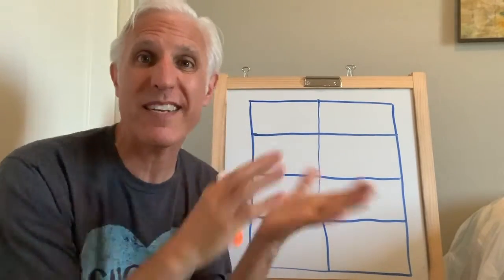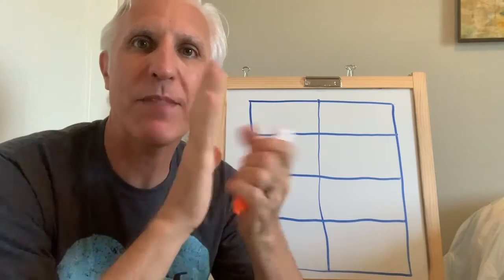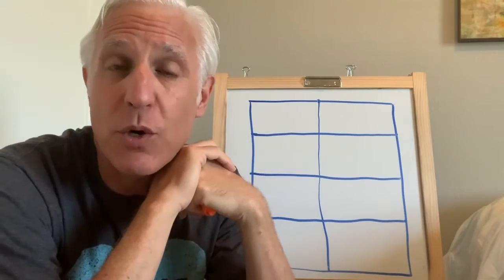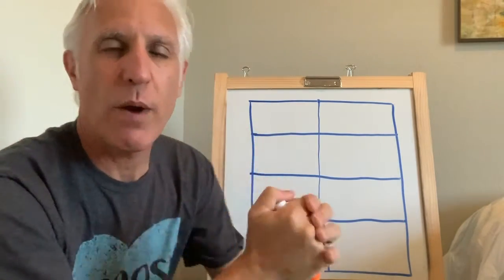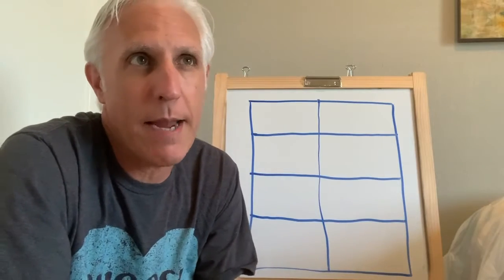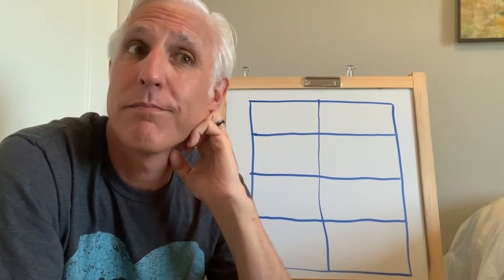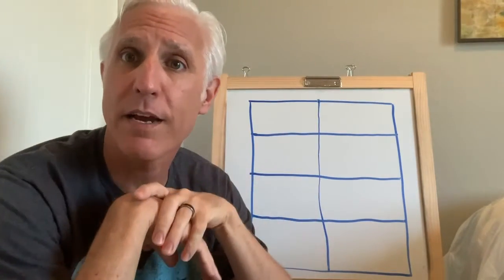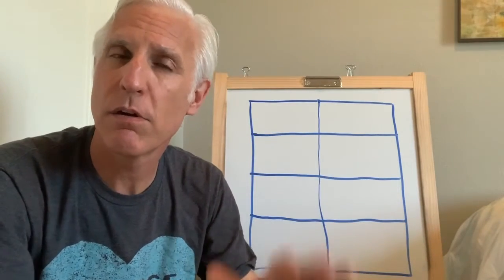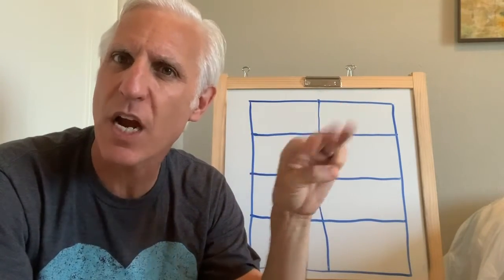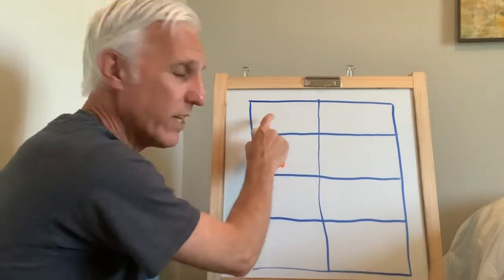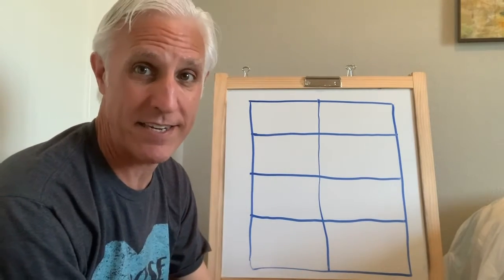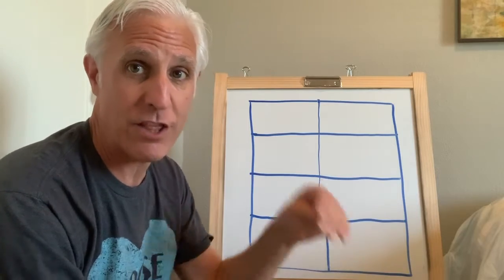We're gonna do our first story up in this box here — it's gonna be a subtraction story. Once upon a time there were five ladybugs, but then three of them flew away. We're gonna write that equation. If you want to write it by yourself, push pause and write it: five ladybugs and three went away.